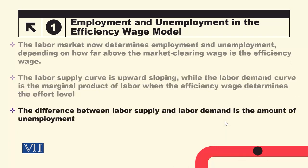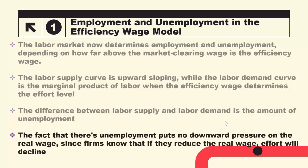The difference between labor supply and labor demand is the amount of unemployment. The fact that there is unemployment puts no downward pressure on the real wage, since firms know that if they reduce the real wage, effort will decline.